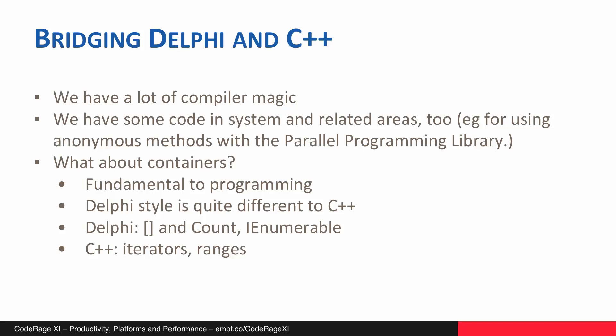This particular talk is going to focus on containers. Containers are fundamental to programming, but the Delphi style containers like TList or TStringList or the items in System.Generics.Collections are quite different to C++ — they perform the same function but being written in a different language, they're designed very differently. Delphi uses the index operator and Count quite a lot, as well as IEnumerable so you can enumerate over the contents of the collection. C++ focuses a lot on iterators and ranges.